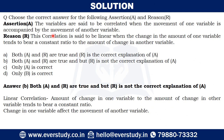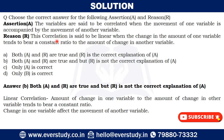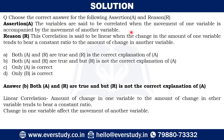Both statements are correct, but R is not the correct explanation of A. The assertion states that variables are correlated when there is a movement in one variable accompanied by movement in the other — that is correct. The reason defines linear correlation with a constant ratio — that is also correct. However, R does not explain A, so B is the correct answer.